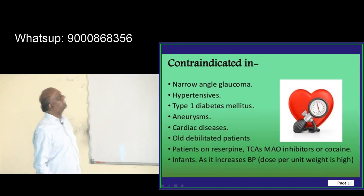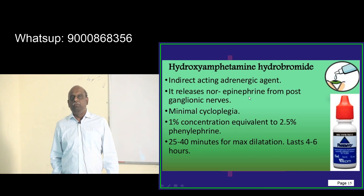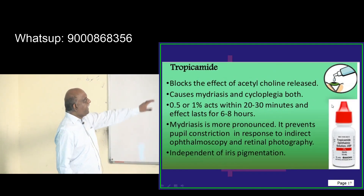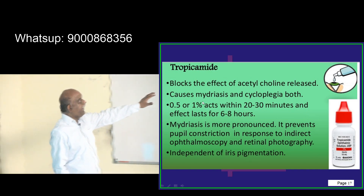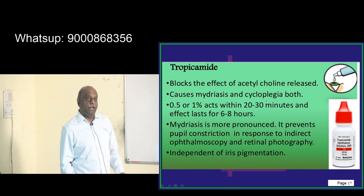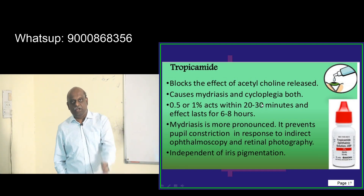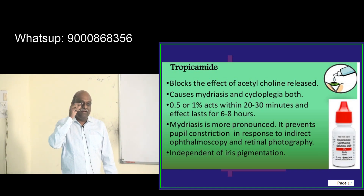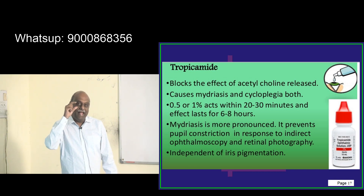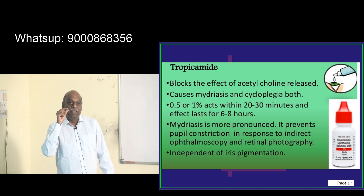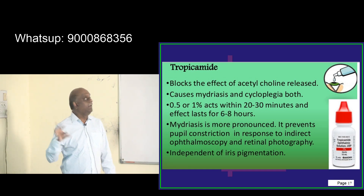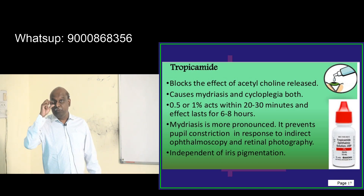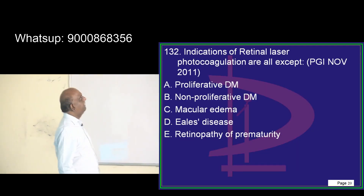Miotics and mydriatics is one topic in pharmacology which you need to study a little longer. Tropicamide blocks the acetylcholine — it is an anti-cholinergic drug used in ophthalmology. It causes mydriasis. Sphincter pupillae and parasympathetic stimulation lead to miosis, so any blockade of that parasympathetic by tropicamide leads to cycloplegia, ciliary muscle relaxation, and pupillary dilatation.